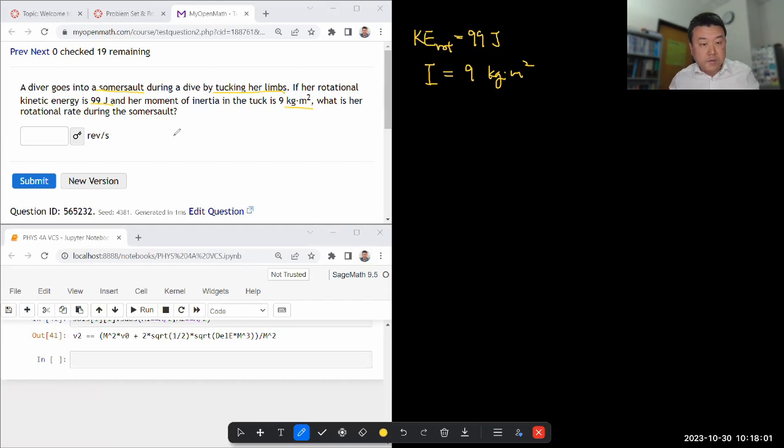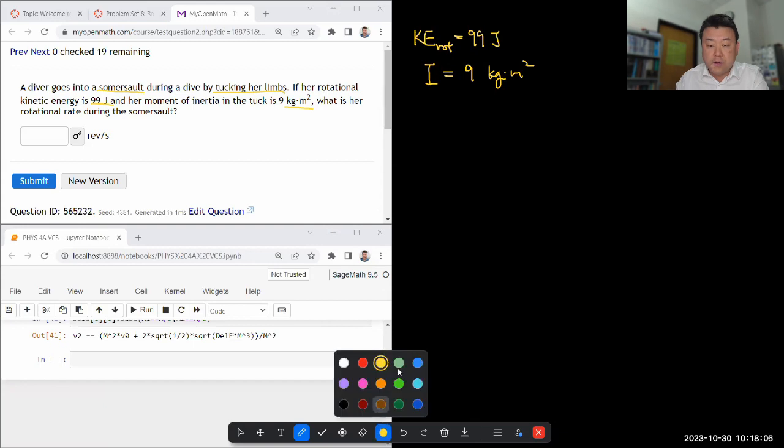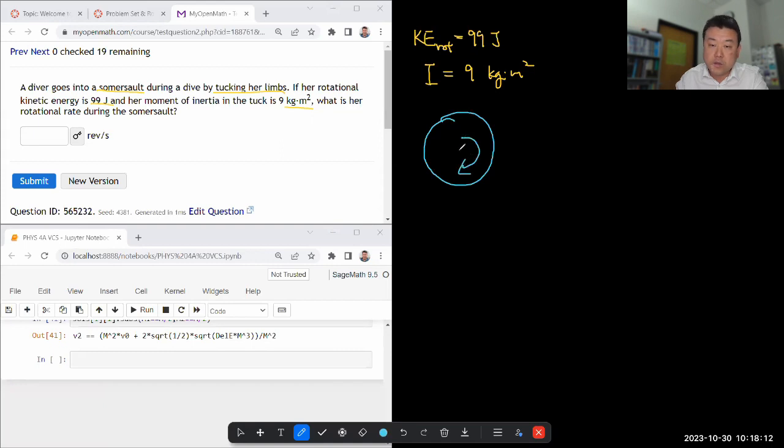So I don't think there's no process here to think about. You should have a mental image that you have someone who's rotating with some angular velocity. And this person has some rotational inertia. And you should know the formula for rotational kinetic energy in terms of these two.